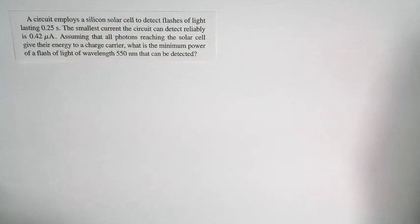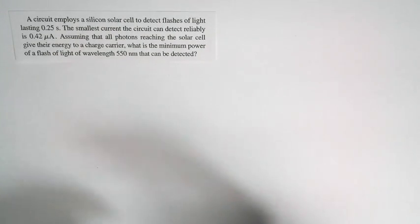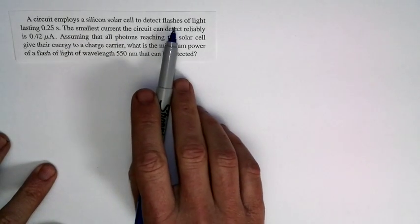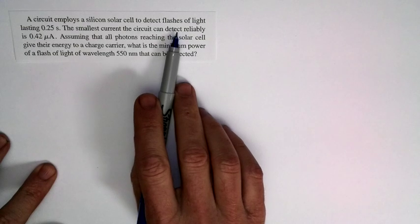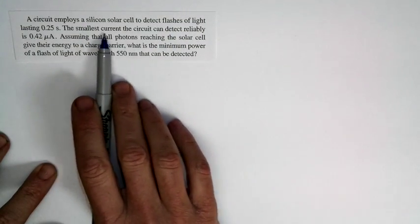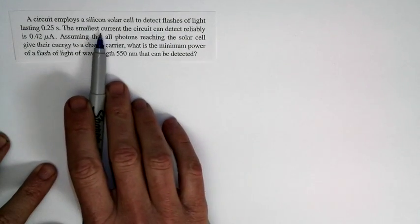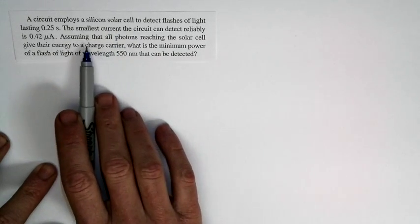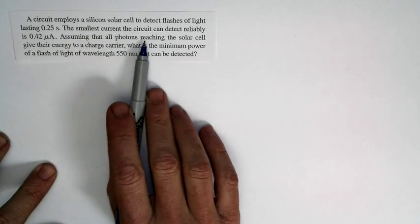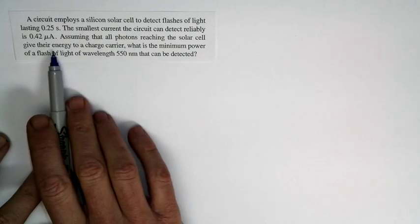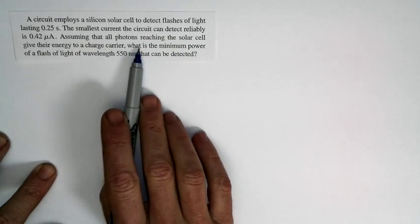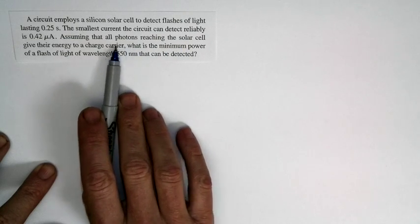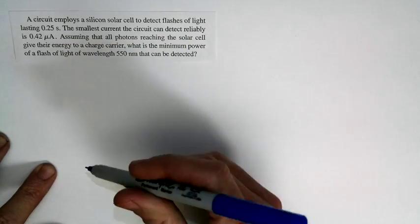Let's go ahead and set up this problem. Here's what the question asks: a circuit employs a silicon solar cell to detect flashes of light. We're detecting the flashes of light by detecting a current that the solar cell produces. The solar cell produces a current this way — all photons reaching the solar cell give their energy to a charge carrier. We're going to assume one photon creates one electron in the circuit.